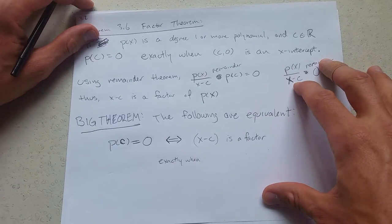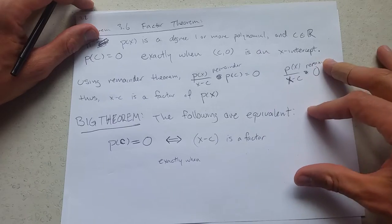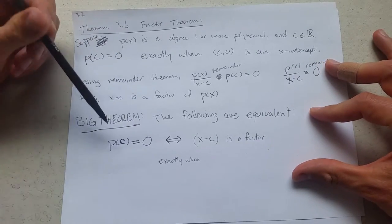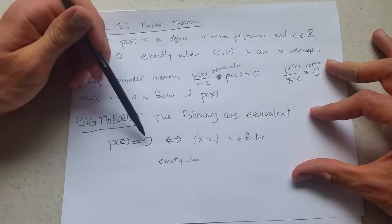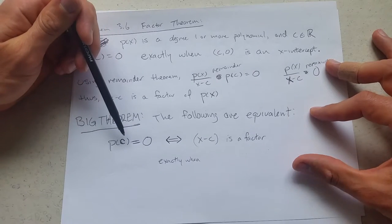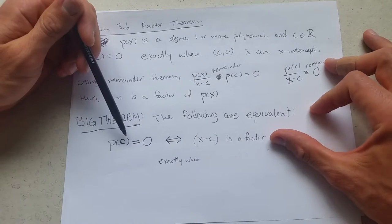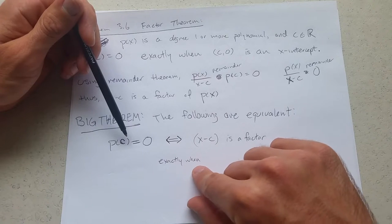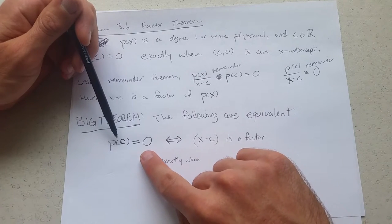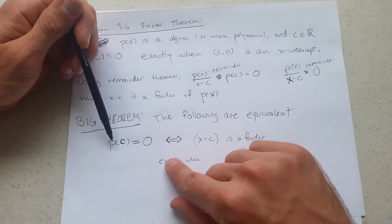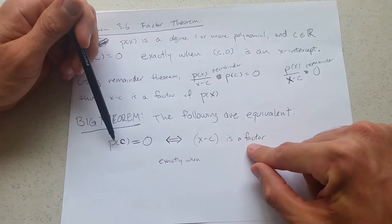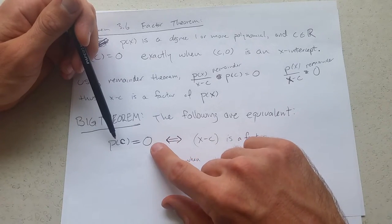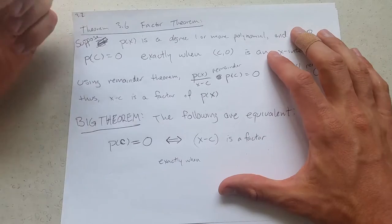The big theorem in this section is corresponding x-intercepts or zeros to factors. This double arrow means exactly when. So that means if you know you have an x-intercept, you also know you have a factor. So here is an x-intercept, here's a factor.